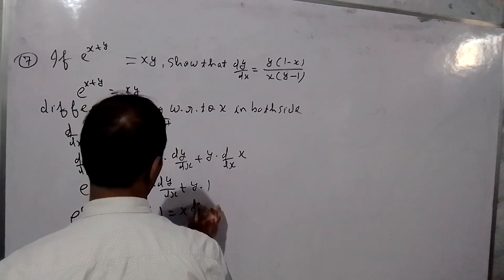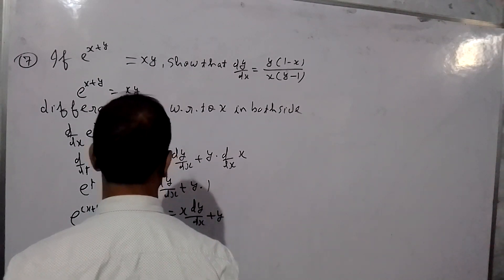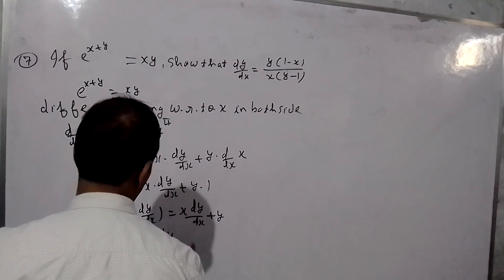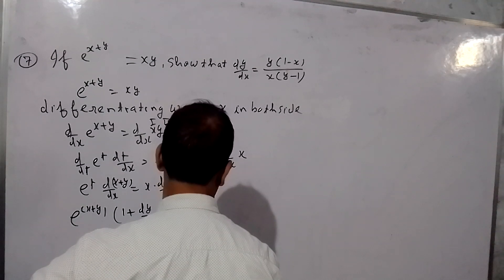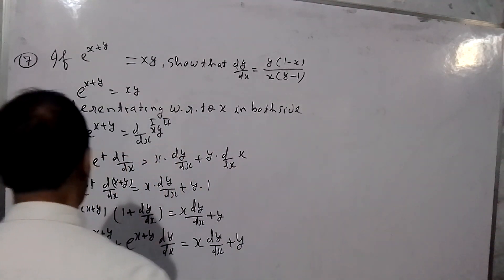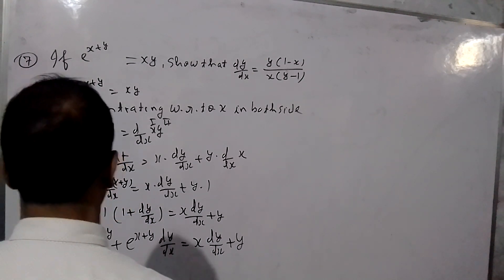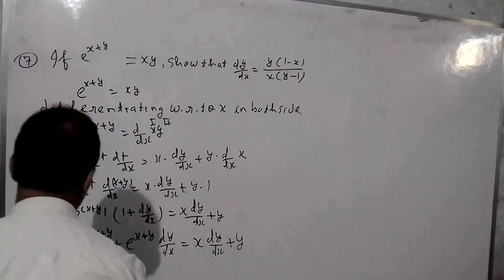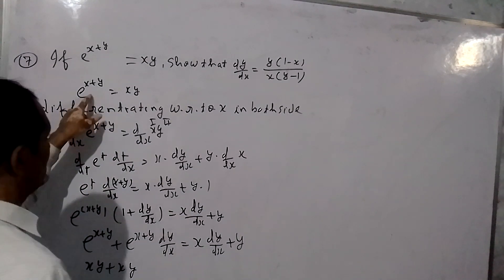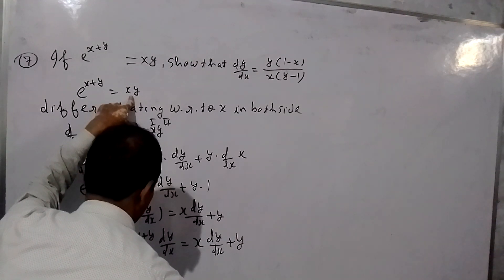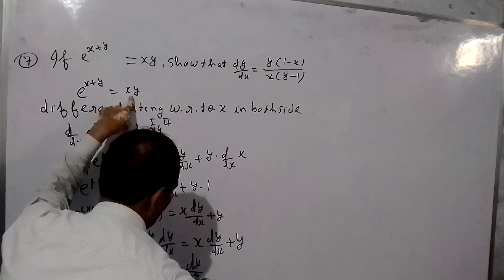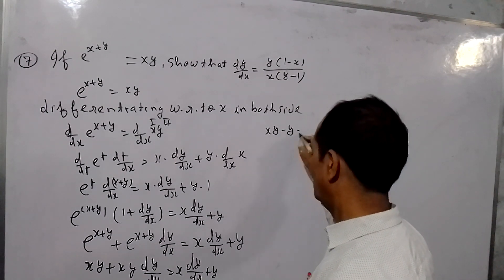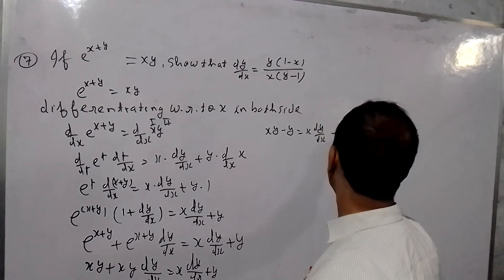This is equal to x times dy/dx plus y, using the product rule on the right side. Expanding: e raised to (x plus y) plus e raised to (x plus y) times dy/dx equals x times dy/dx plus y.